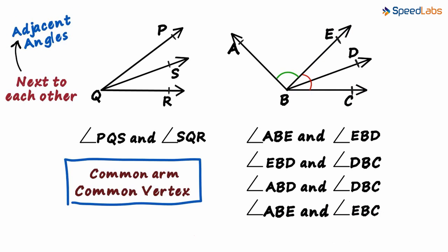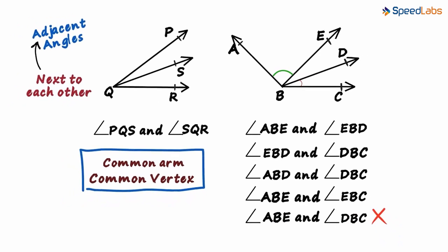What about the same green angle and this tiny red angle? We are talking about angle ABE and angle DBC. They are not adjacent angles. Yes, they have a common vertex but they do not have a common arm. Another small condition we need to remember.